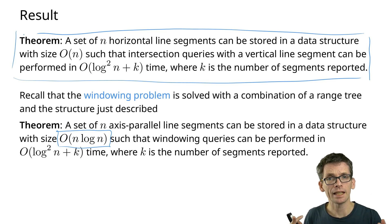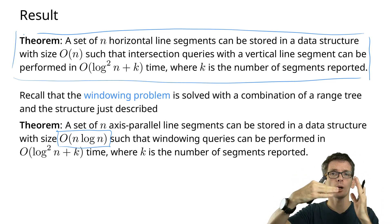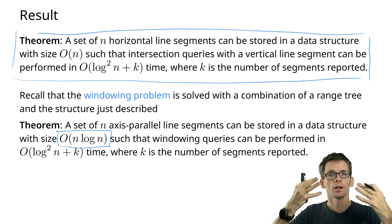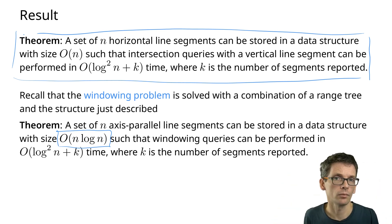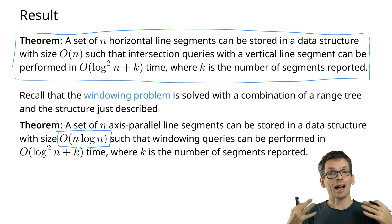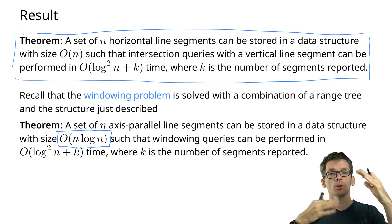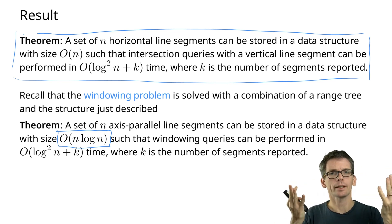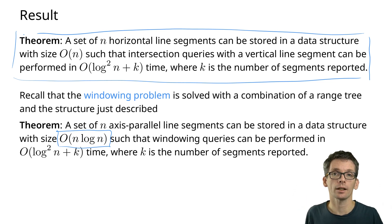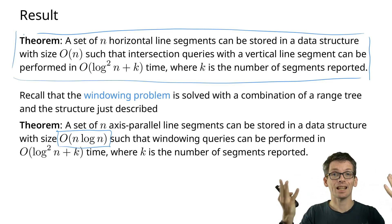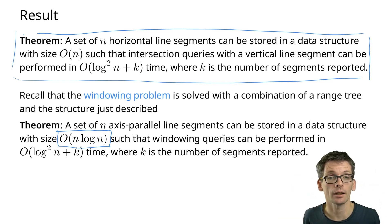So far we've handled horizontal and vertical segments with axis-aligned rectangle queries. Next we want to handle arbitrary non-intersecting segments and query with an axis-aligned query window to find the segments that intersect that window.